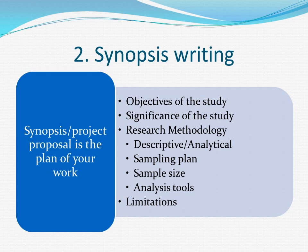Next is the sampling plan — you have to decide the method of sampling. Maybe simple random sampling, stratified sampling, or even convenient sampling may be used by students. For sample size: in statistics, less than 30 is considered a small sample and 30 or above is a large sample. Students can take a sample size of 30, 50, or a maximum of 100. You also need to mention the analysis tools — the statistical tools you are going to use, like ratios, percentages, tables, charts, and so on.